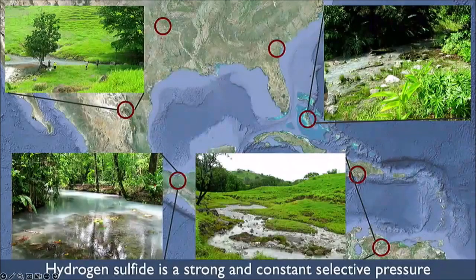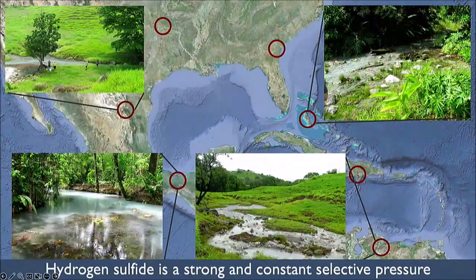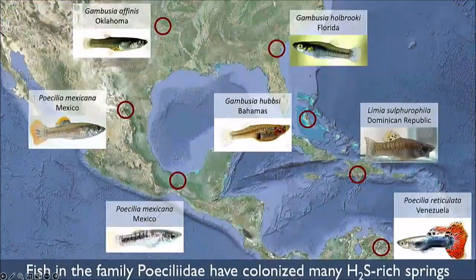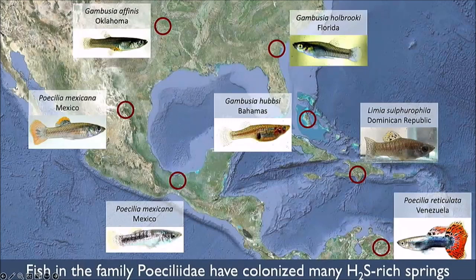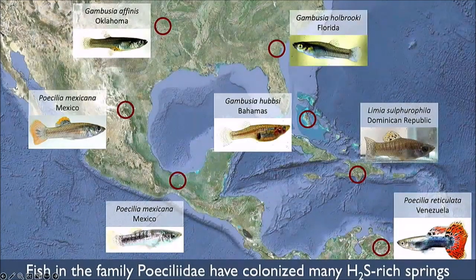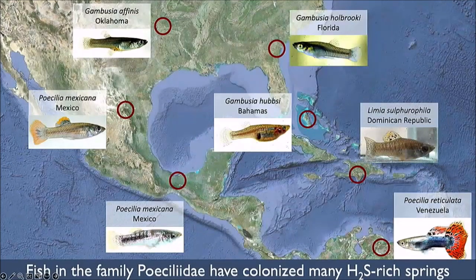Hydrogen sulfide is found in springs in the Caribbean basin. Tomorrow I have a graduate student traveling with a field crew to southern Mexico to continue some of our sampling. Multiple different species from the same family have invaded hydrogen sulfide-rich springs across these different springs. When I learned about this system from my colleague Michi Tobler, I thought: this is incredible — it's a natural experiment with natural replicates. In addition to having replicates at the population level, we also have replication at the species level in a much broader context.